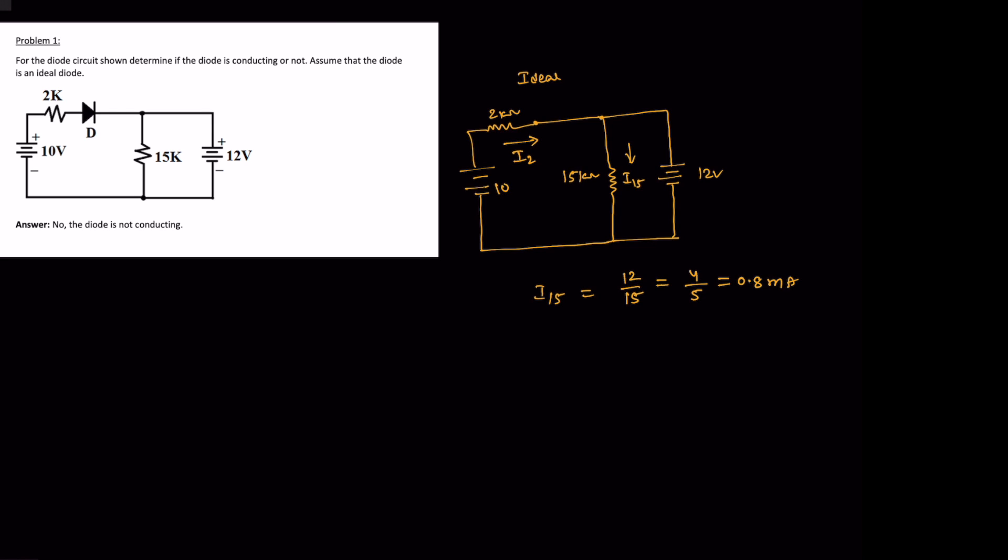So at the same time, let's calculate what is this current I2. Let's say it is I2 because it is flowing through two ohm resistor. So we know the voltage across this, and that is simply here it is 10 volt and here it is 12 volt.